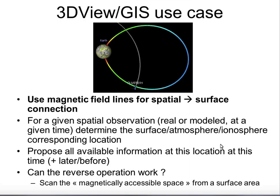A typical GIS use case for 3DVue: we need magnetic field lines to map the spatial-to-surface connection, where surface can mean atmosphere or ionosphere. From this mapping at a given time and altitude, the ideal tool would propose all available information at that location, at that time, and also before and after. We could also aim to do the reverse — starting from the surface or a given altitude and looking back into space to see what observations were made at that time, for instance within a cone for in-situ observation.